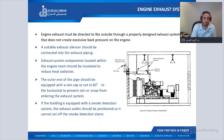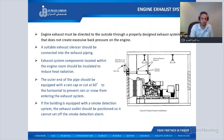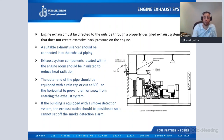If the building is equipped with a smoke reduction system, the exhaust outlet should be positioned so it cannot set off the smoke detection alarm. If the generator is located inside a building, we have to extend the exhaust pipe to outside the building, especially if there is a smoke detection system, because when the generator runs, the smoke detection system will operate automatically.